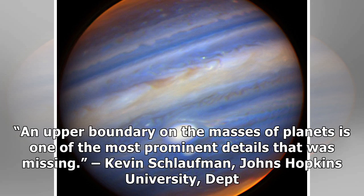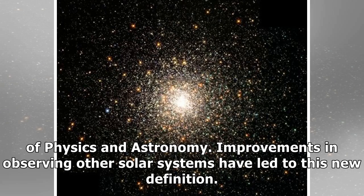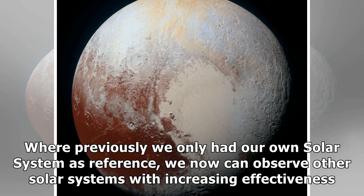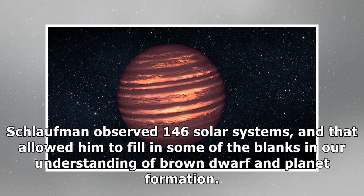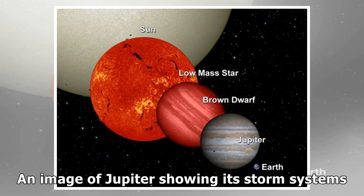Kevin Schlauffman of Johns Hopkins University's Department of Physics and Astronomy made this case based on improvements in observing other solar systems. Where previously we only had our own solar system as reference, we now can observe other solar systems with increasing effectiveness. Schlauffman observed 146 solar systems, and that allowed him to fill in some of the blanks in our understanding of brown dwarf and planet formation.